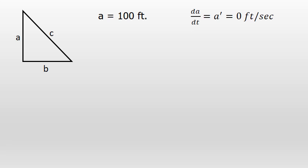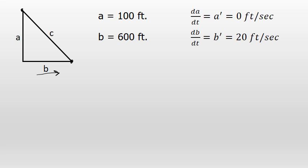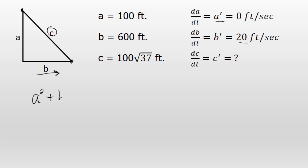In my diagram, I have the lighthouse keeper at the top of a right triangle and the boat moving away from a dock at a rate of 20 feet per second. We've represented all of those values — A being 100, B being 600, and C being 100 times the square root of 37 — as sides of a right triangle. We've also discussed that A prime, the rate of change of side A with respect to time, is 0 feet per second, and B prime is 20 feet per second. We're trying to figure out the rate of change of side C. All variables A, B, and C can be related by the Pythagorean theorem.